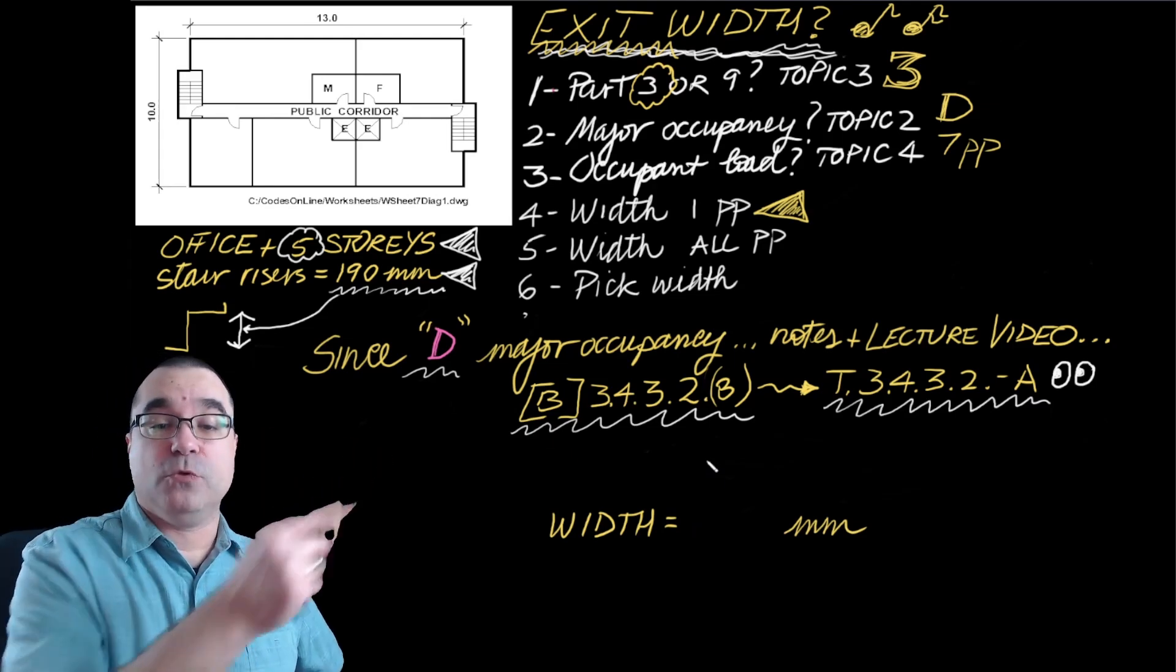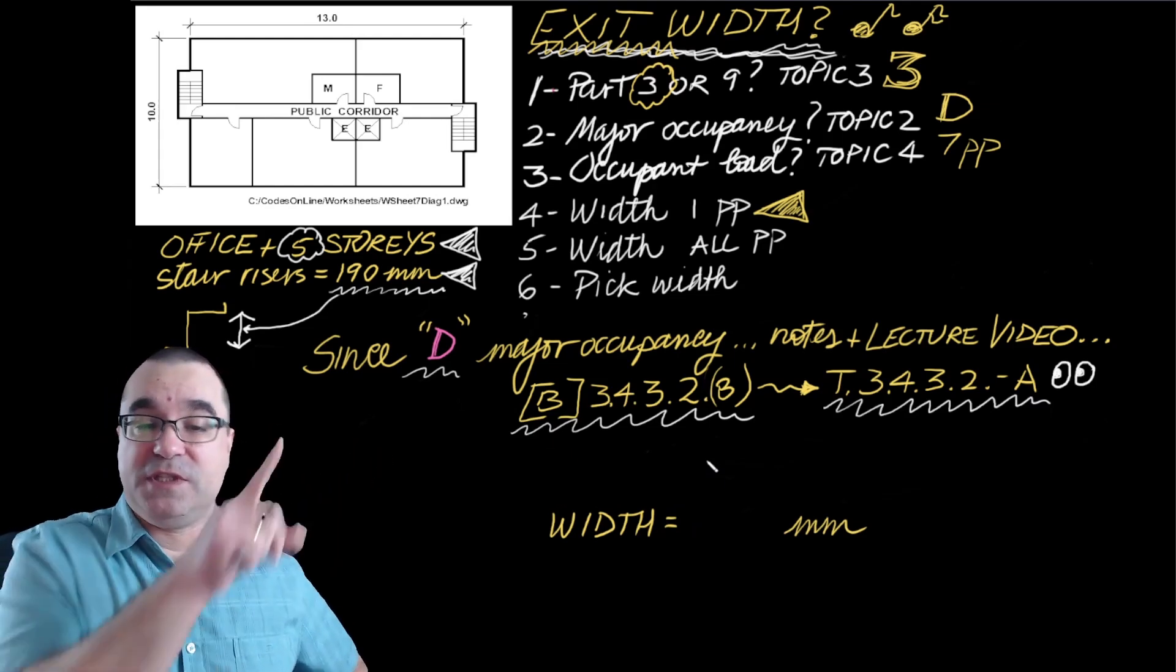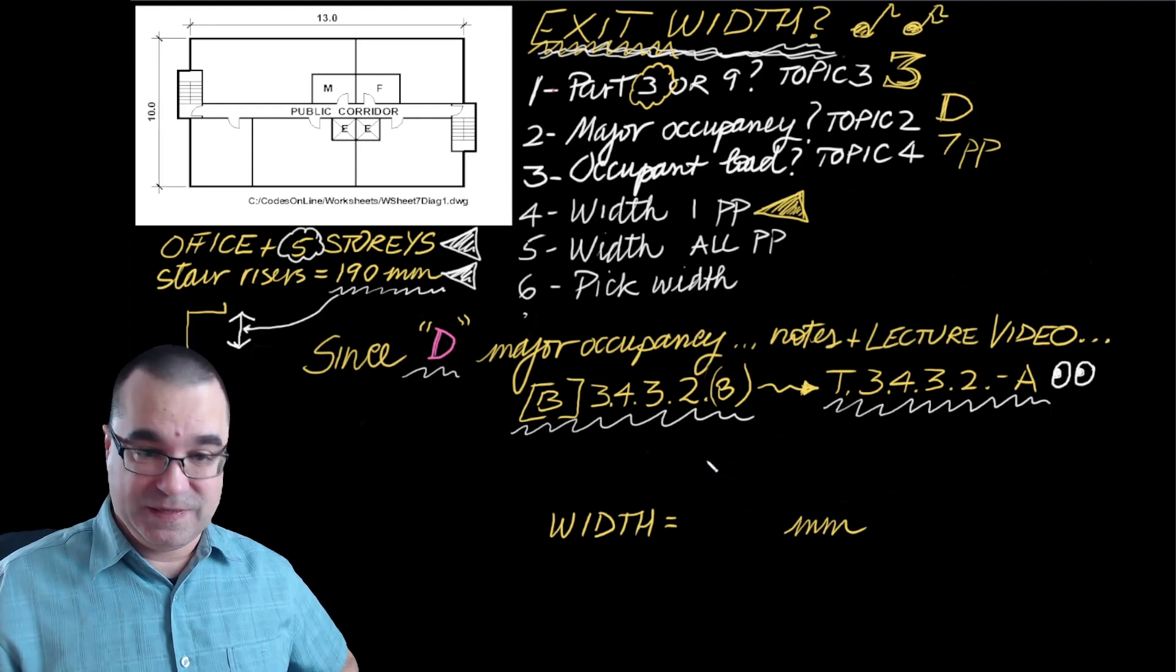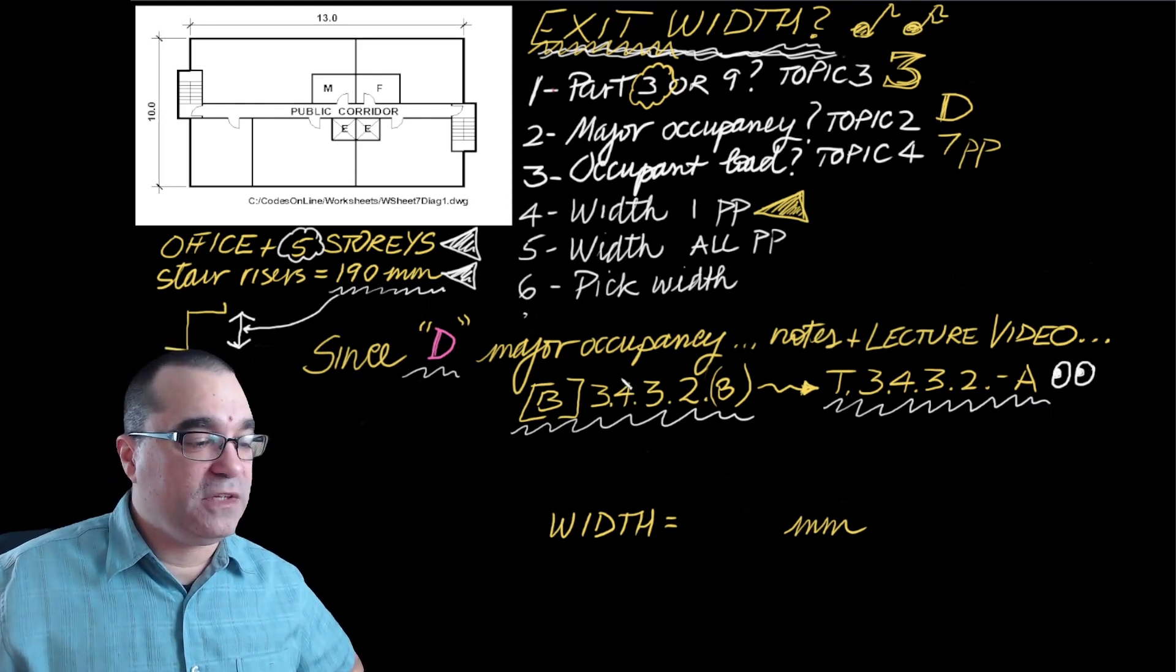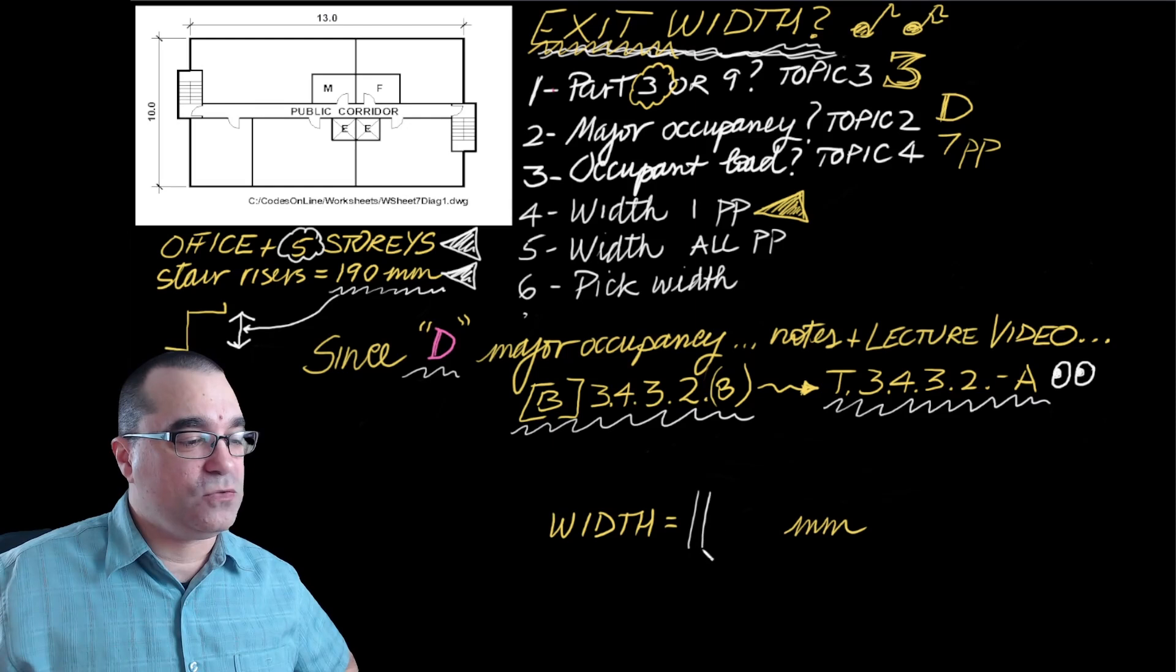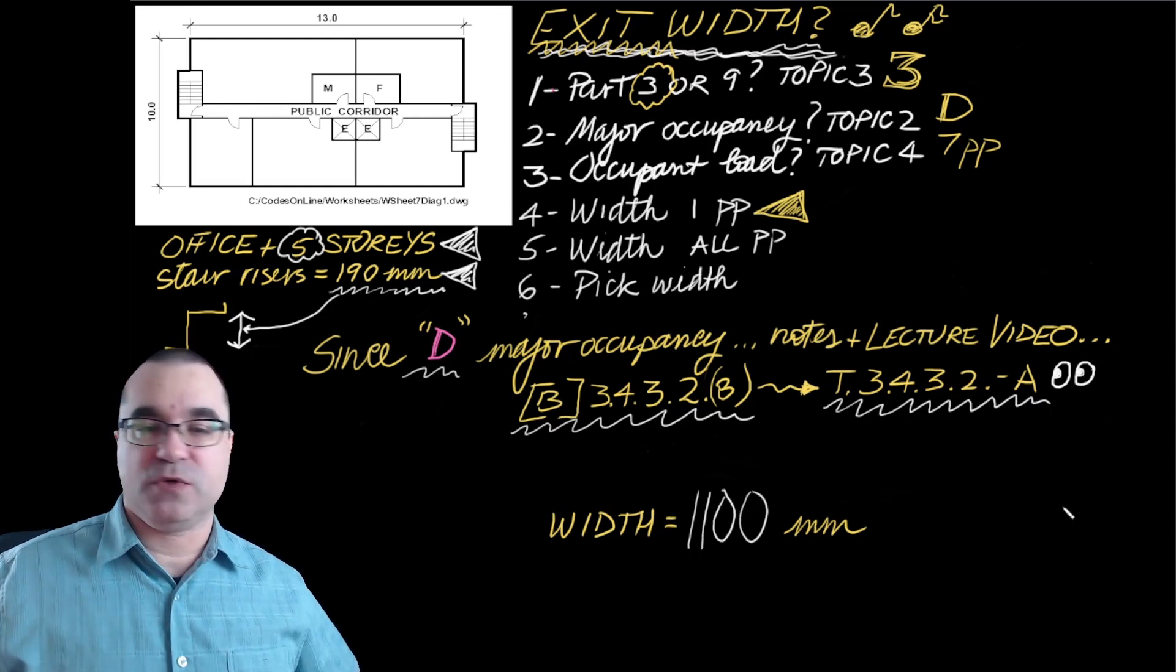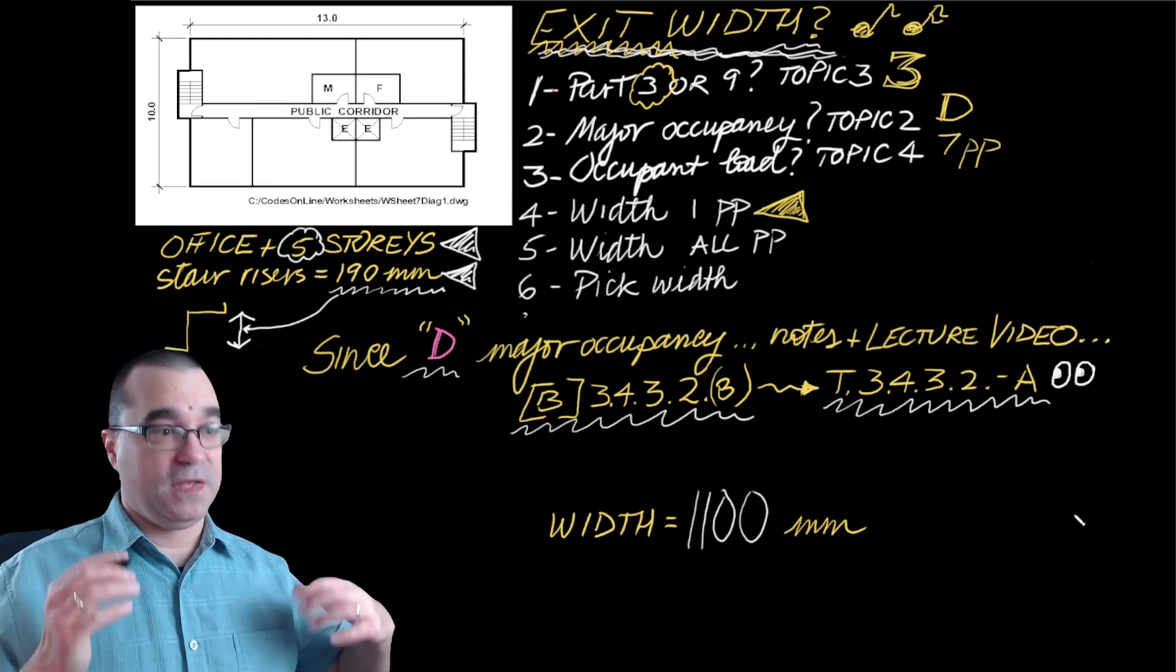So what this table tells us is that for D major occupancies, for stairs, the minimum width for exit stairs is 1,100 millimeters. Great.